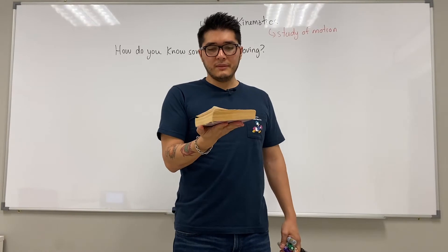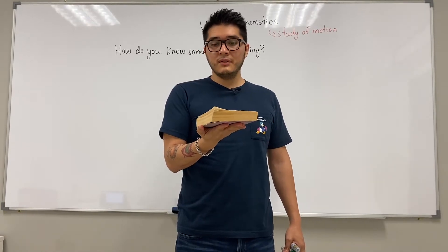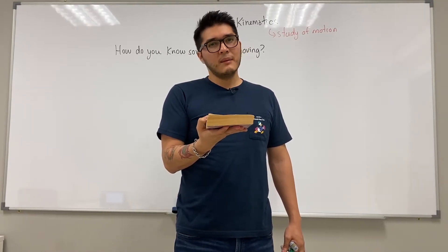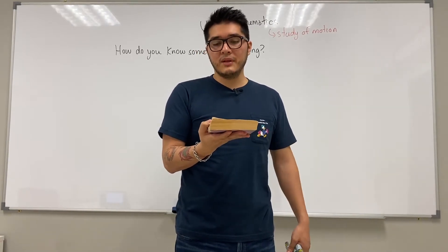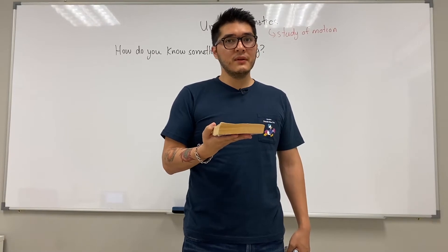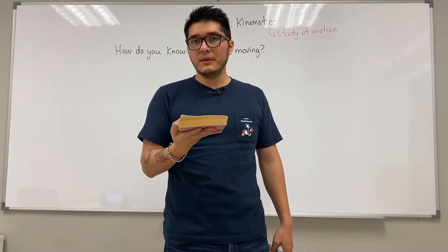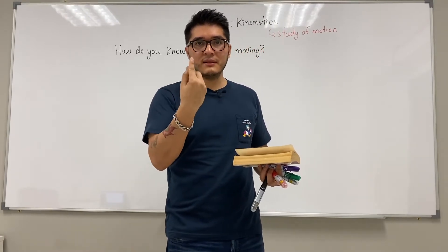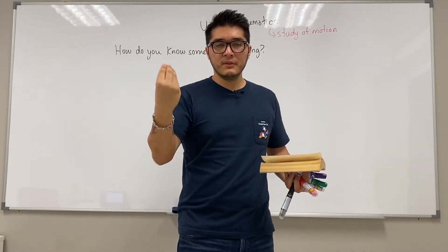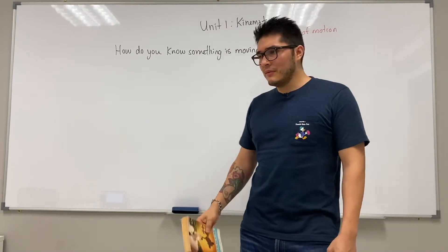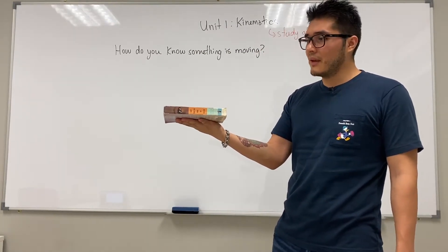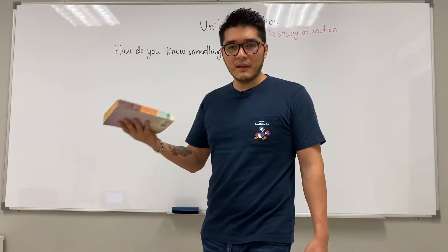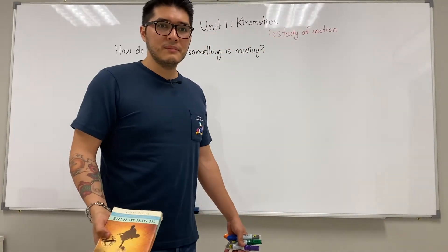Let's take this book. To you, this book will be stationary. But if we try to think of this in a larger picture — we're inside of the earth, and the earth happens to be constantly rotating around its axis and orbiting around the sun. So even if we look at this perceived stationary object from a different point of view, you're going to start to think, oh, it's actually moving.